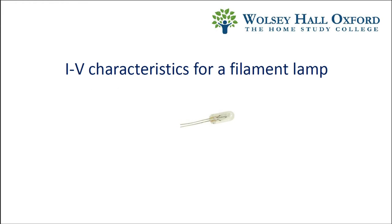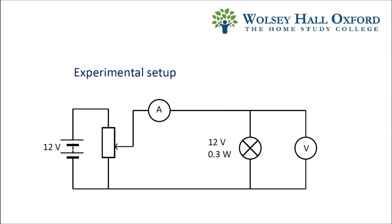This is an experiment to look at the IV characteristics of a filament lamp. I'm using a small 0.3 watt lamp with an operating voltage of 12 volts. I've set up the rheostat as a potential divider.